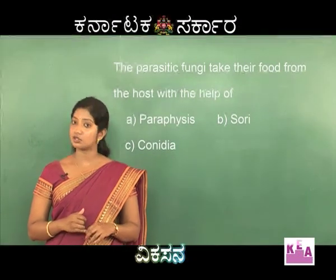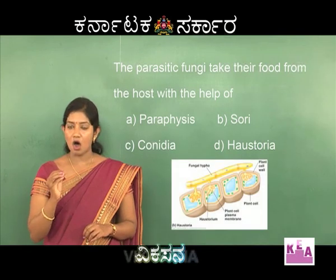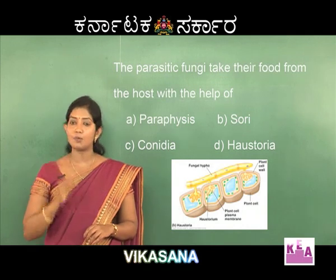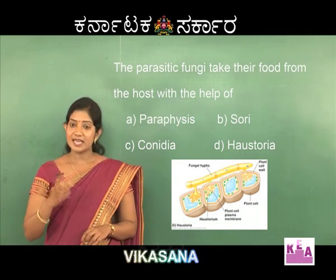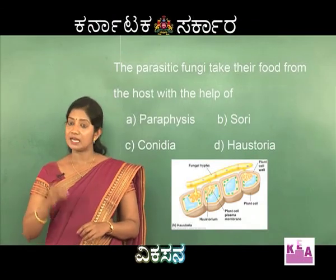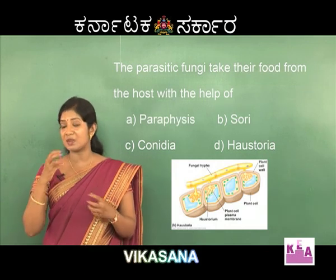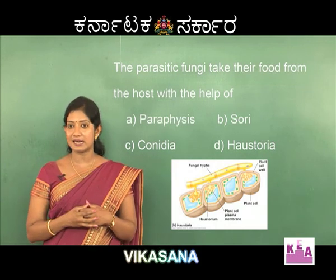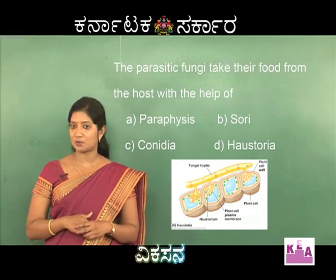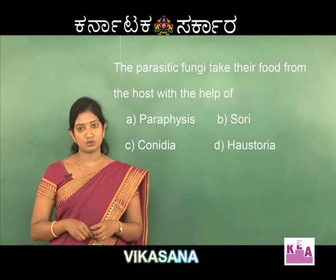The last option is haustoria. Haustoria are button-like or slightly branched structures found at the tip of the hypha. These are found in parasitic fungi because they push these structures into the host cell and start absorbing the ready-made food prepared by the host. So the right answer is D, haustoria.